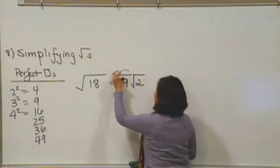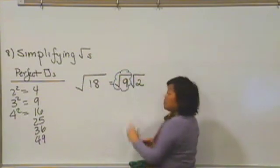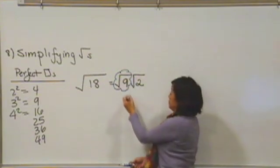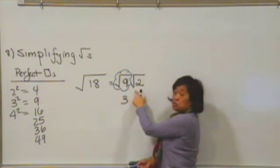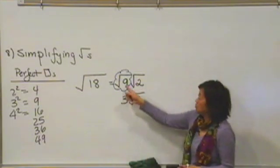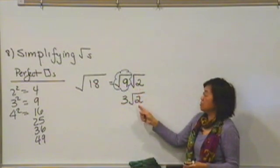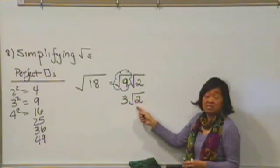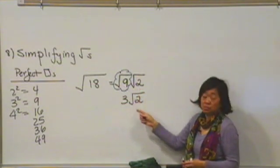So, 9 is a perfect square. The square root of 9 is the number 3. 2 is not a perfect square. And so, we have the square root of 9, 3, square root of 2. So, the square root of 18 simplified is 3 square root of 2.